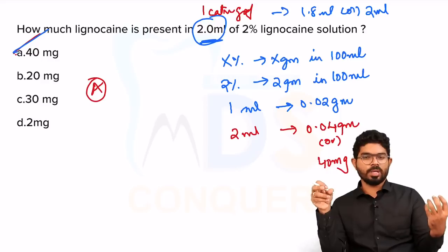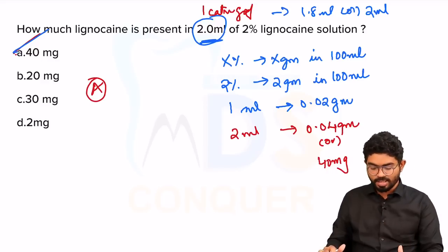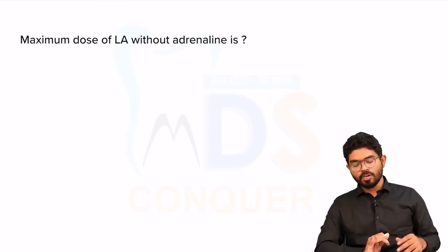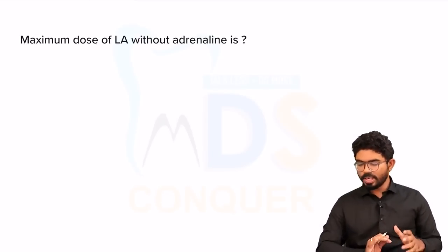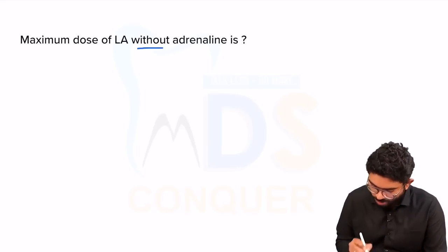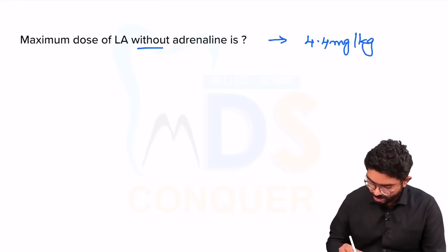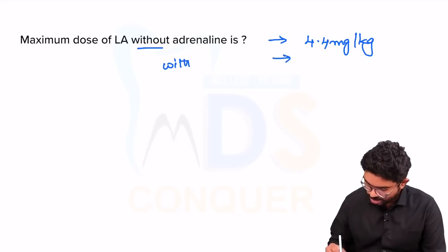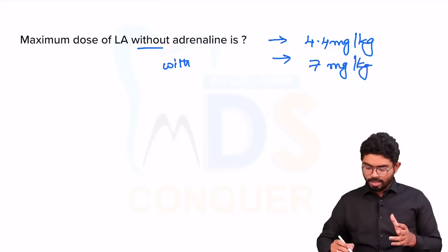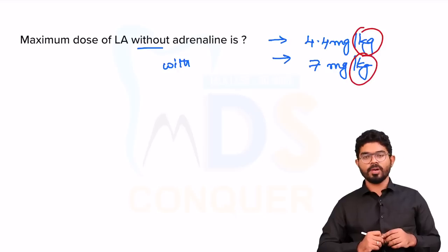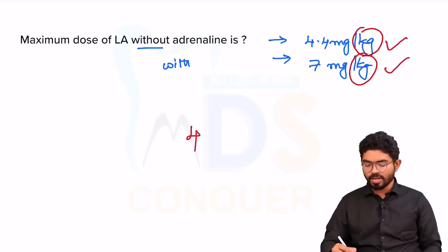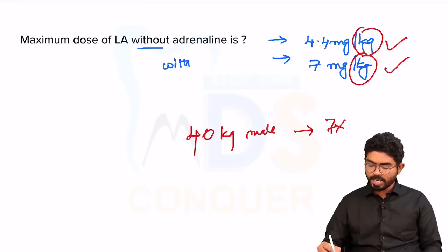The second level covers maximum doses of local anesthesia with and without adrenaline — the most commonly asked questions. Without adrenaline, it is 4.4 milligrams per kg body weight. With adrenaline, it is 7 milligrams per kg body weight. Since the question asks per kg body weight, for a 40 kg male with adrenaline: 7 × 40 = 280 milligrams.